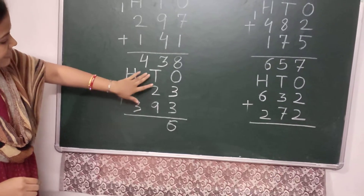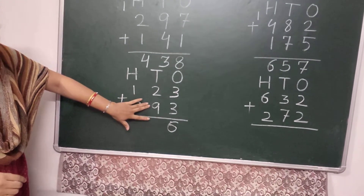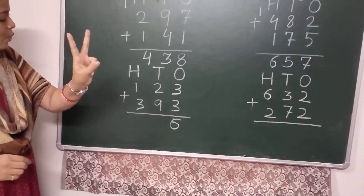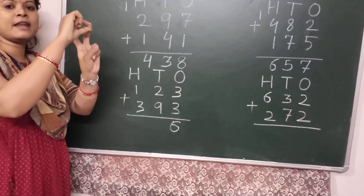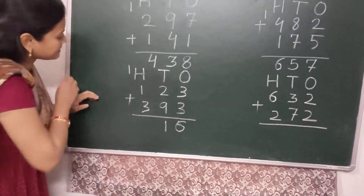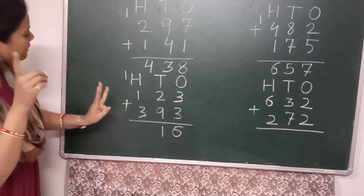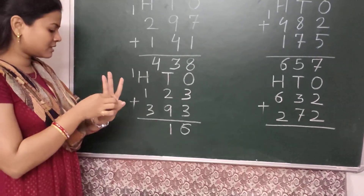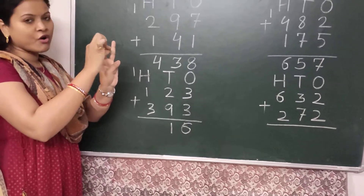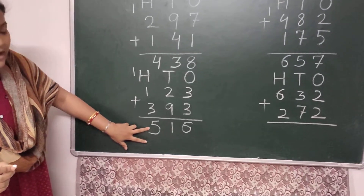Then I come to the 10's place. The numbers are 2 and 9. 9 is the larger number, so I keep 9 in my mind and take 2 fingers: 9, then 10, then 11. I write here 1 and carry 1 to the 100's place. In the 100's place, 1 plus 1 is 2, then I take 3 fingers: 2, then 3, 4, and 5. I write here 5 and your answer is 516.